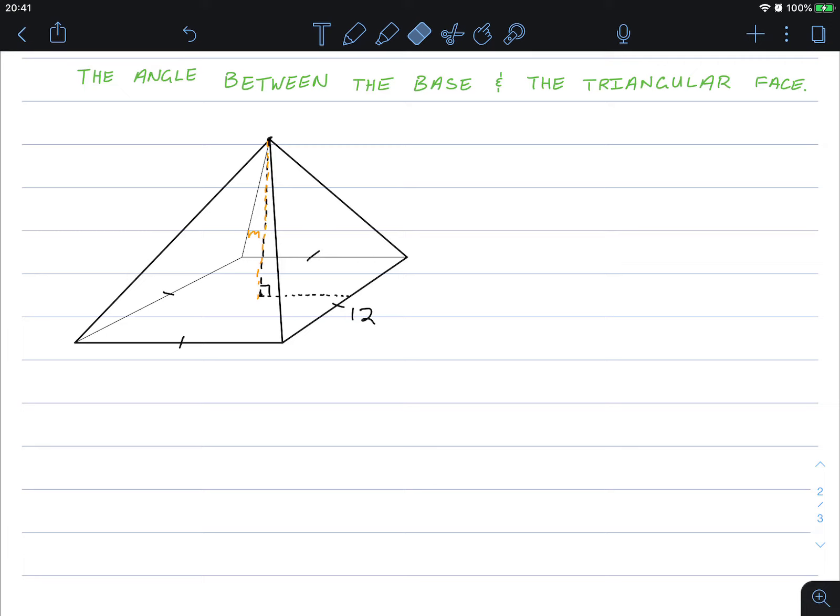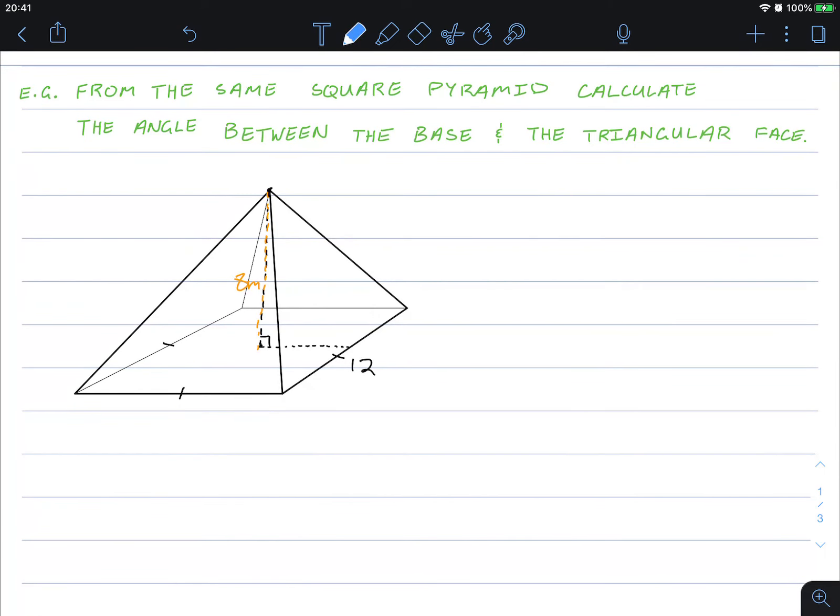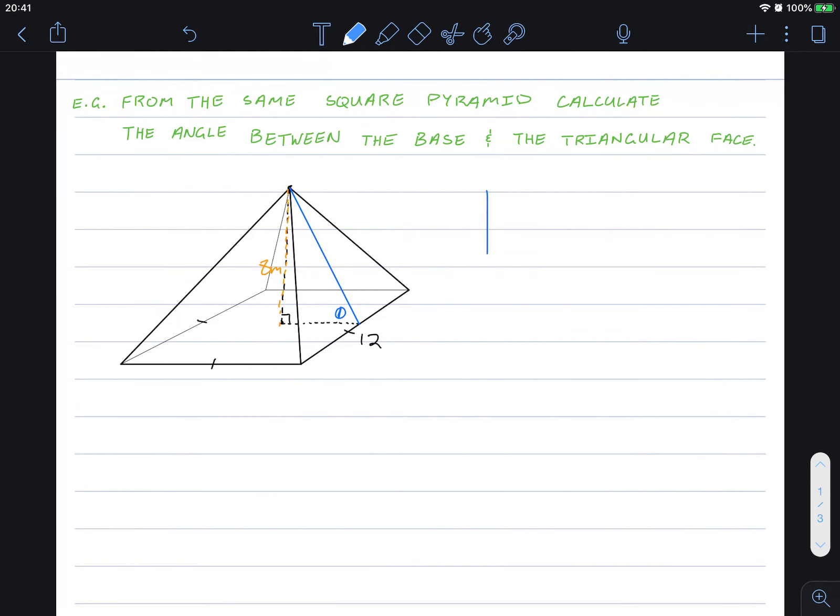Get rid of these little markings. Actually, no, we need that. It's 8 meters. So now the angle that we're looking for is actually between the center of this triangular face and the base. So we want this angle here. Okay, so let's draw this triangle out. We're looking for this angle.